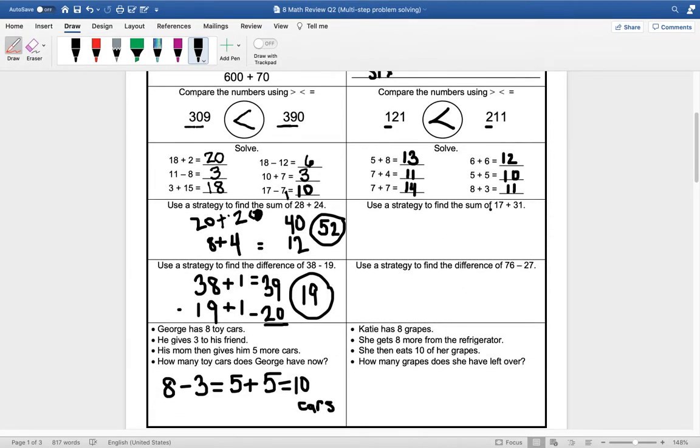All right, using a strategy to find the sum of 17 and 31, let's add our tens. So 10 plus 30, and then our ones is 7 plus 1. So 10 plus 30 is 40. 7 plus 1 is 8. So then we would add 40 plus 8 and get 48 as our sum.